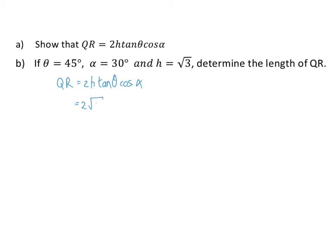So, H will become square root 3, tan of theta will become tan 45, and cos of alpha will become cos of 30 degrees. And if you use your calculator, you will end with 3 units.